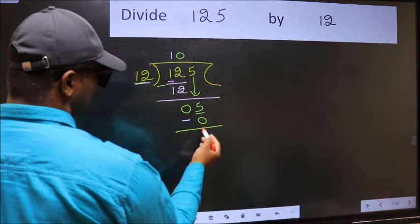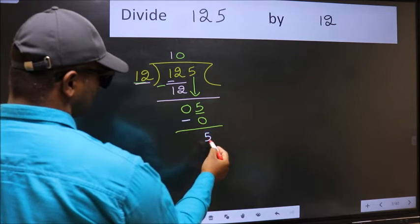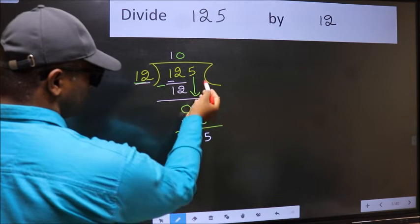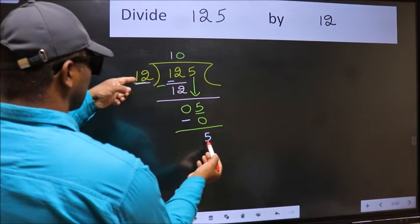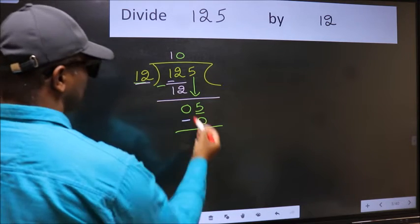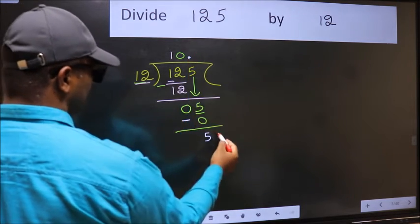Now you should subtract. 5 minus 0, 5. Over here, we did not bring any number down, and 5 is smaller than 12. So now you can put dot and take 0.